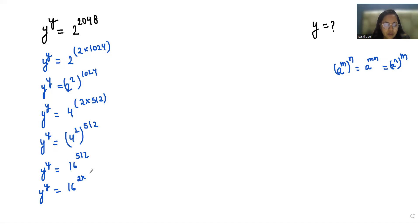This gives us 2 times 256. So y^y equals (16^2)^256, and 16^2 is 256, giving us 256^256.